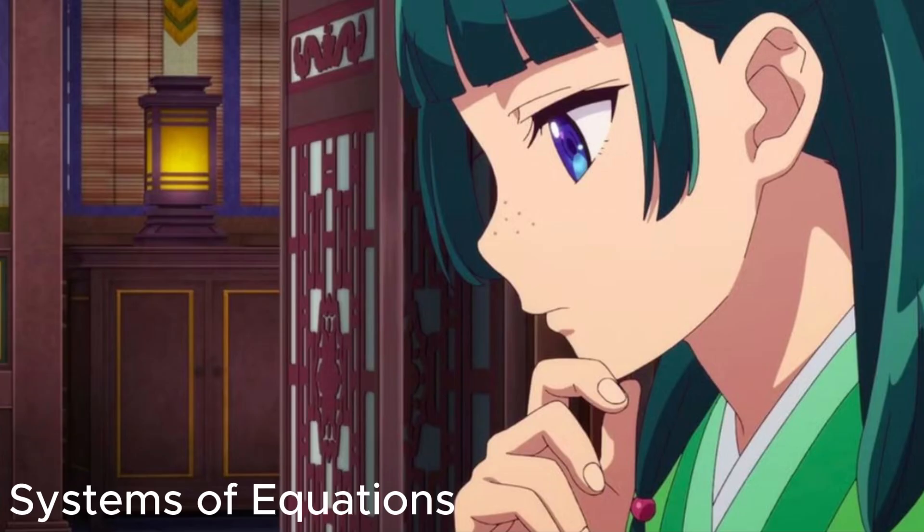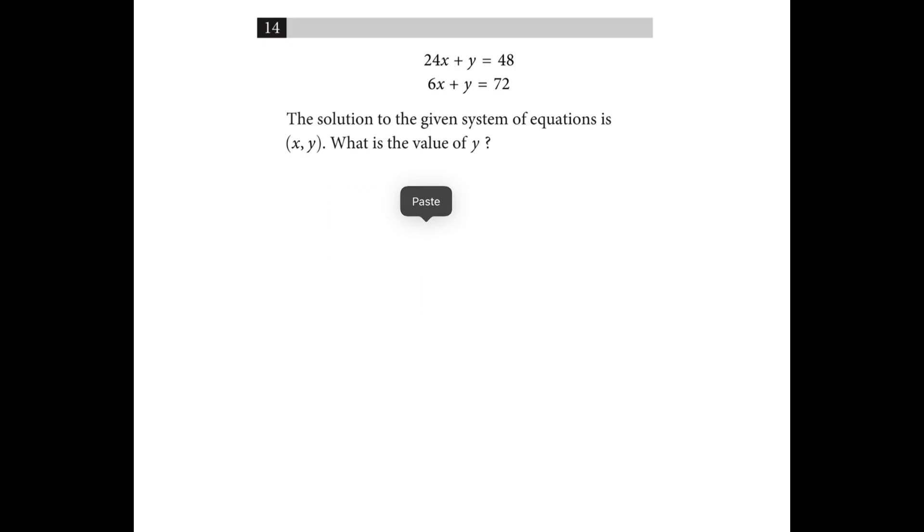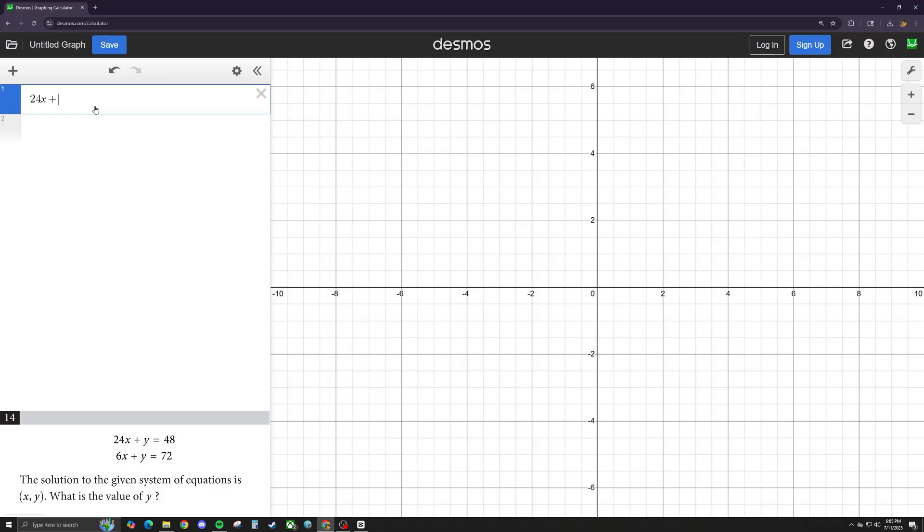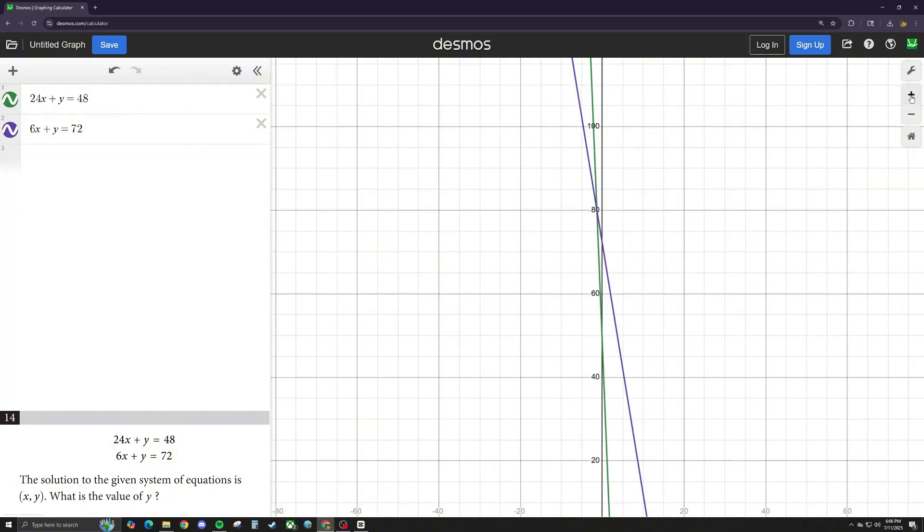So how do we Desmos? How would you usually solve a system of equations? You find a way to eliminate a variable, solve for the remaining variable, and if you have to, plug that back into the original equation and find the variable you got rid of. But how would you do that now? Well, you just plug it into Desmos and see where the lines intersect just by clicking on the point that it gives you, and that's it. That's your answer.